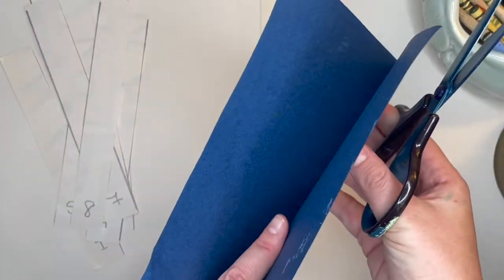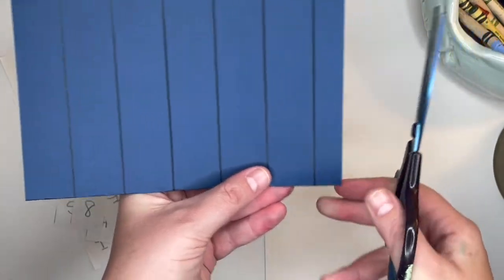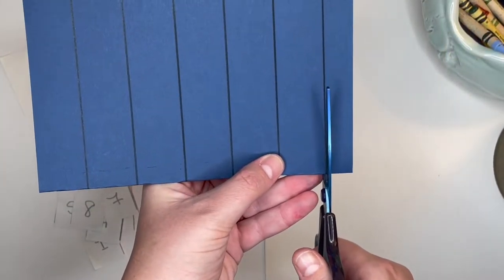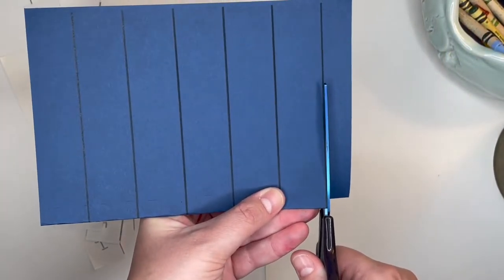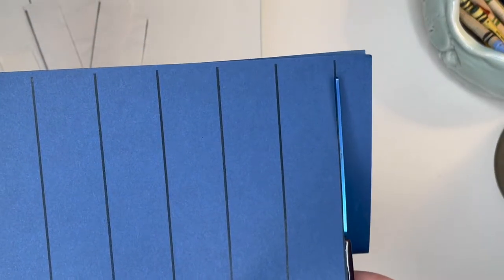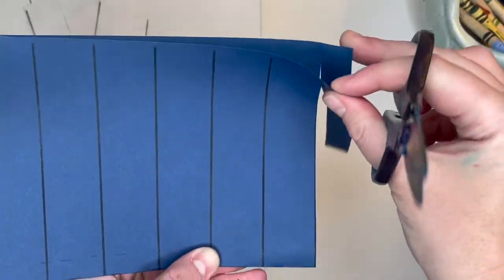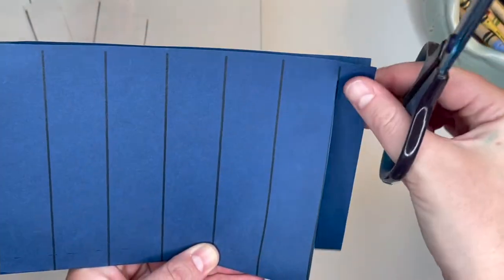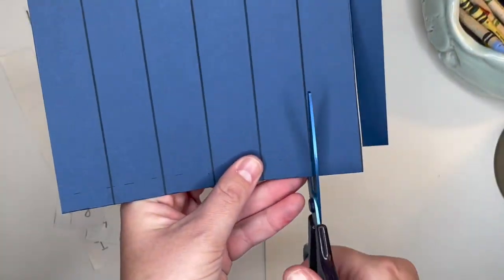Just like when we cut symmetrical shapes, we want our paper to stay as one piece. So when you are cutting, stop a little bit before you get to the edge. We want the paper to stay together.